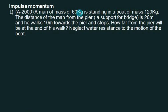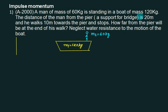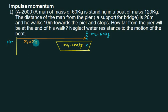A man of mass 60 kg is standing in a boat of mass 120 kg. The distance of the man from the pyre — the support of the bridge — is 20 m. So initially, x1 equals x2 equals 20 m. After this, the person walks 10 m towards the pyre — that is, towards this side — and the boat will shift to the other side.